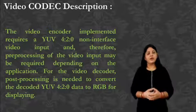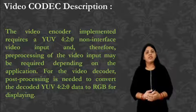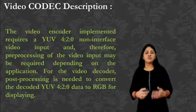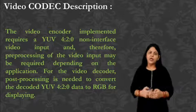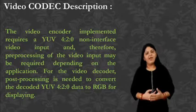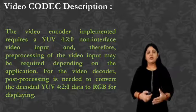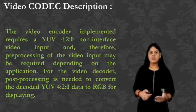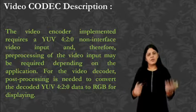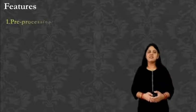For the video decoder, post-processing is needed to convert the decoded YUV 4:2:0 data to RGB for display. In the practical, we have also learned about how we can convert RGB to other models and other models to RGB. So the conversion into RGB is required.